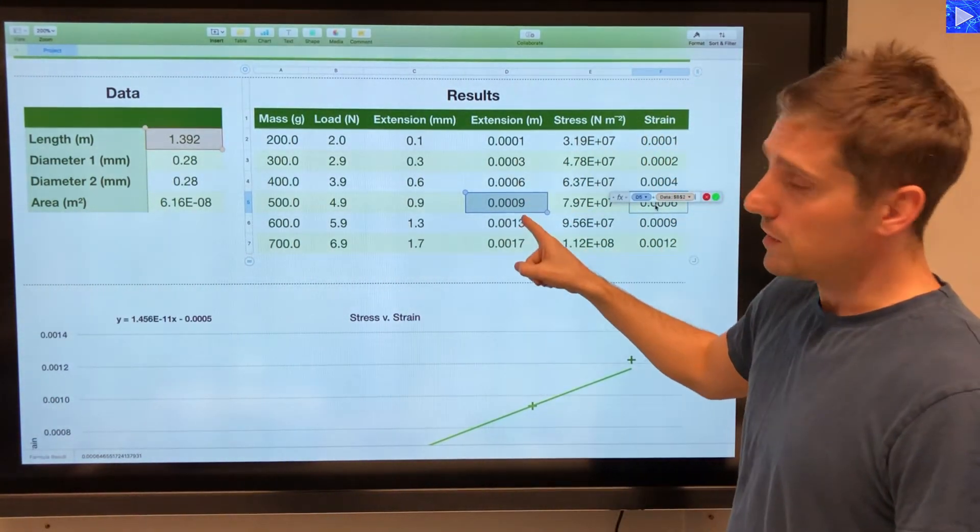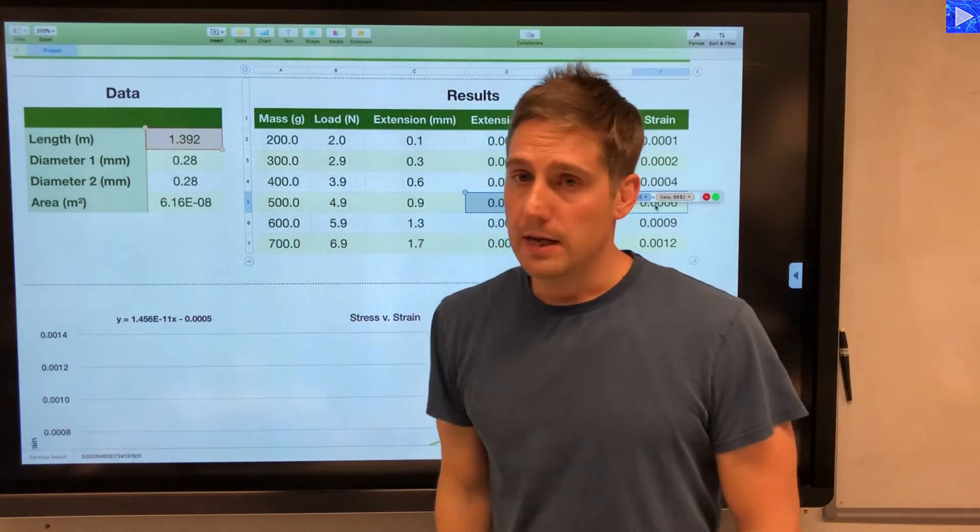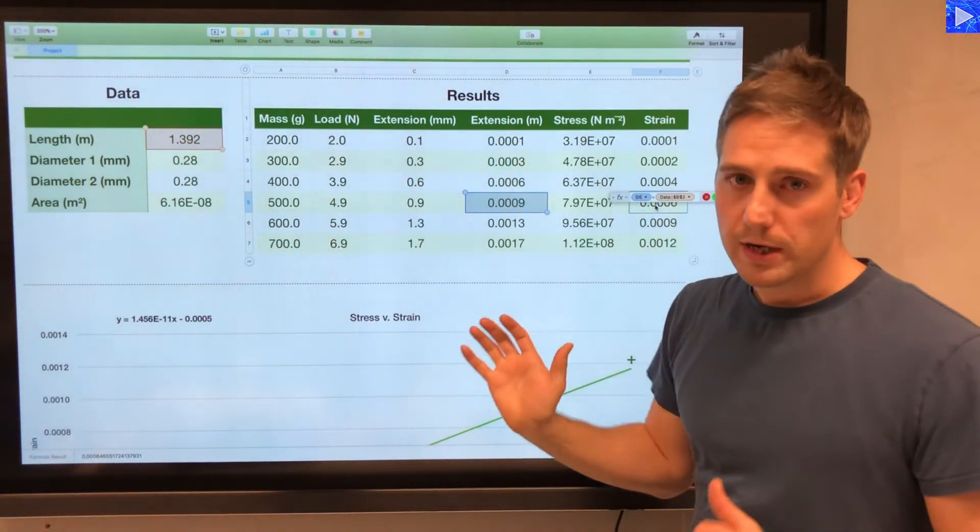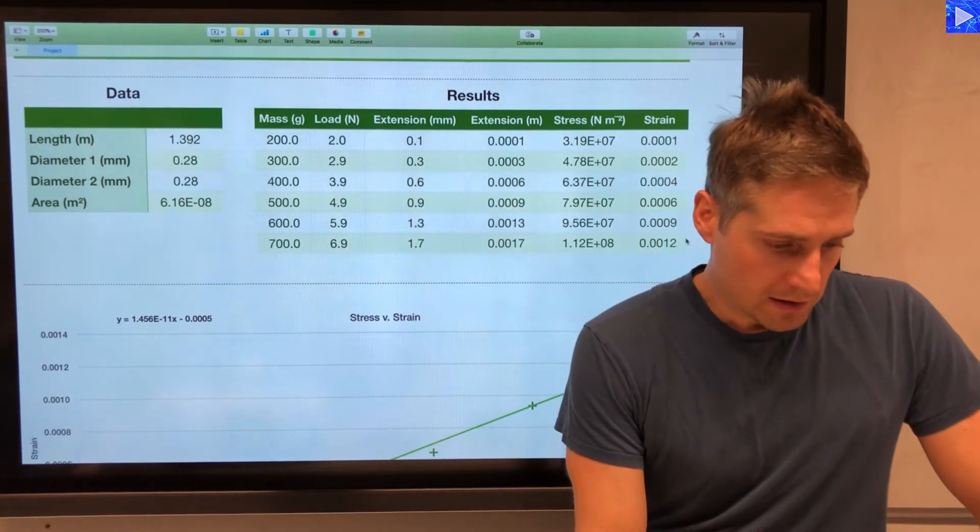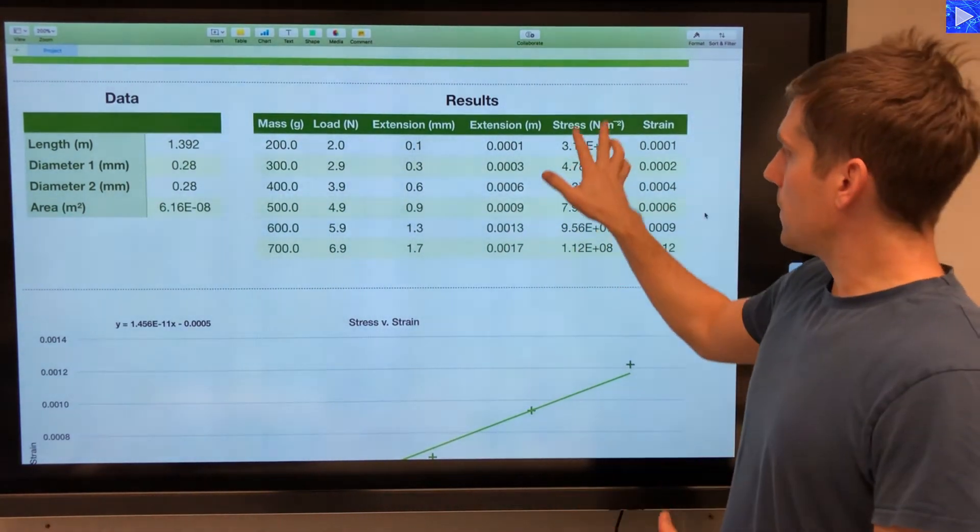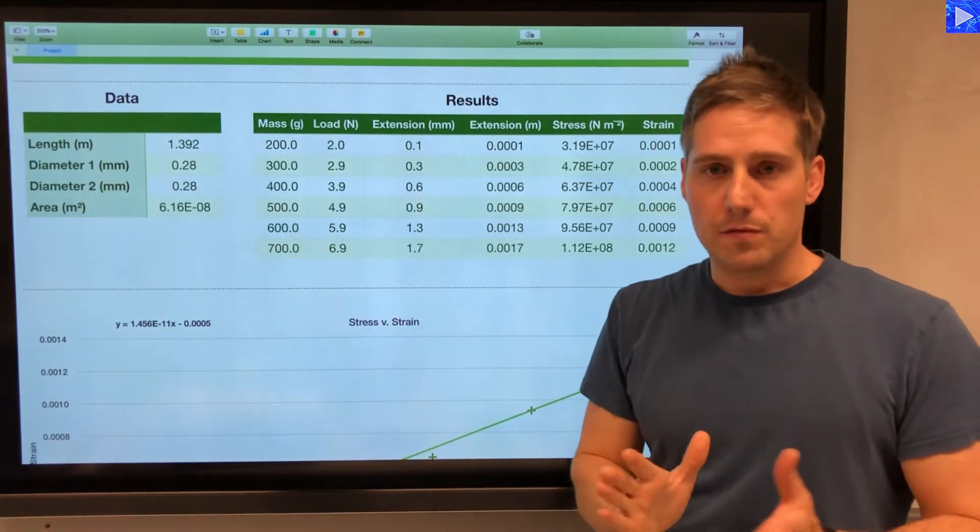This extension is in meters. The length is in meters. The units cancel out there. As you know, strain is just a ratio of those length dimensions. So these are the two columns that I'm interested in for my graph.